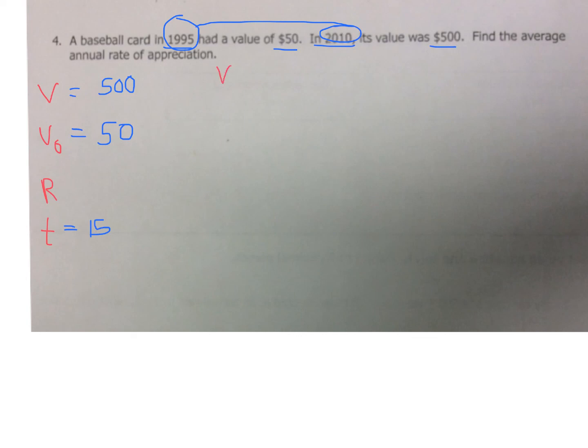Alright, so let's set up our formula. V equals V_O, 1 plus R raised to the T. So let's fill in what we know. So V, 500. V_O is 50. 1 plus R, I don't know. And the time is 15 years. So now, we got to get it. We normally do the work in here, but I can't because I don't know what 1 plus R is. So we're going to have to get this alone. So we're going to start by dividing by 50. Now, 50 divided by 5 is just 10, so that's an easy reduction for me.